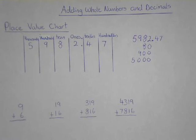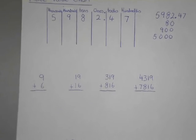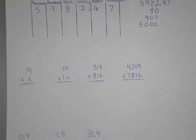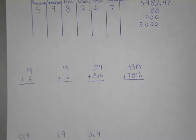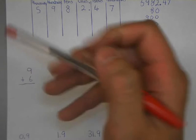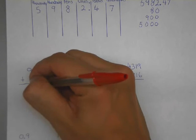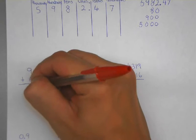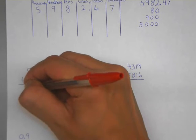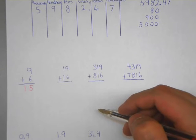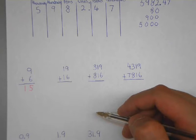So how are we going to add these? Here's an example: 9 plus 6. We always start from the right to the left. 9 plus 6 equals 15. We write the 5 and carry over the 1. If you don't have this concept yet, you can count with your fingers. So 9 plus 6 is 15.